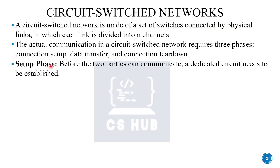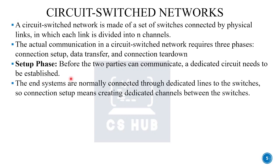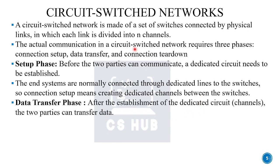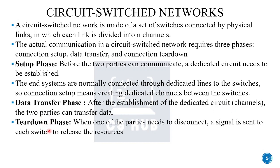In the setup phase, before two parties communicate, a dedicated circuit needs to be established. End systems are normally connected through dedicated lines to the switches. Connection setup means creating dedicated channels between the switches and reserving the channels. After establishment of the dedicated circuit, the two parties can transfer data. When one party disconnects, a signal is sent to each switch to release the resources. The dedicated link is the specialty of the circuit switched network.